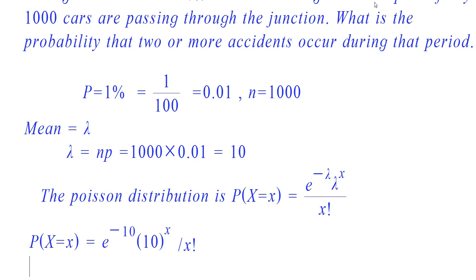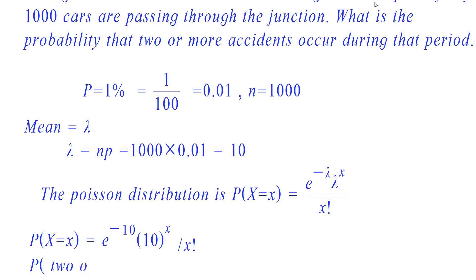That is, there is a possibility of any number of accidents occurring, whose number will be always greater than or equal to 2, which can be represented in the form probability of X greater or equal to 2.